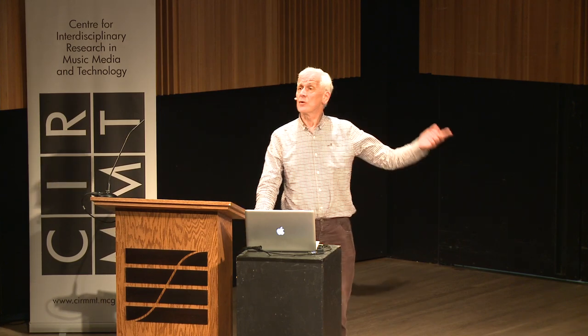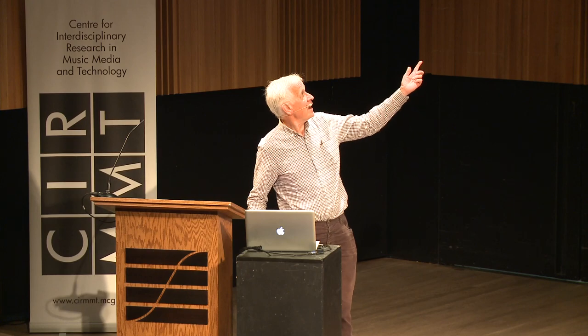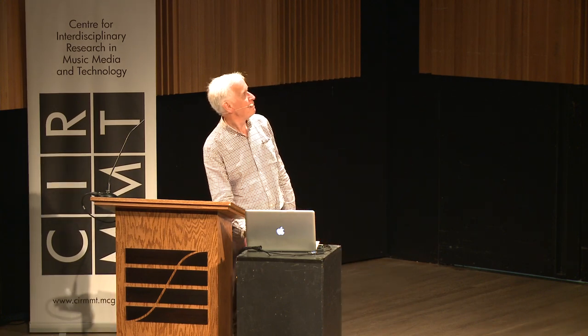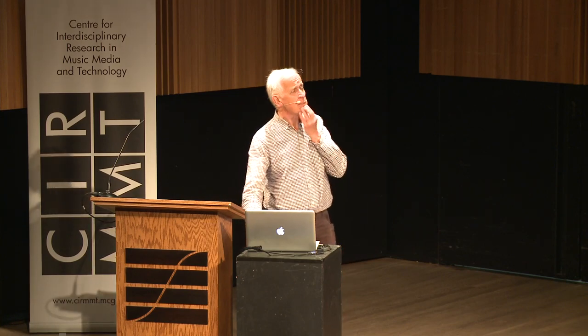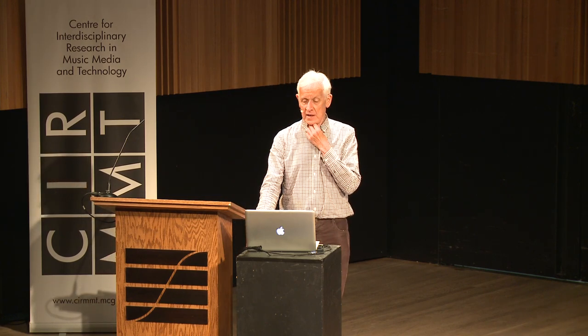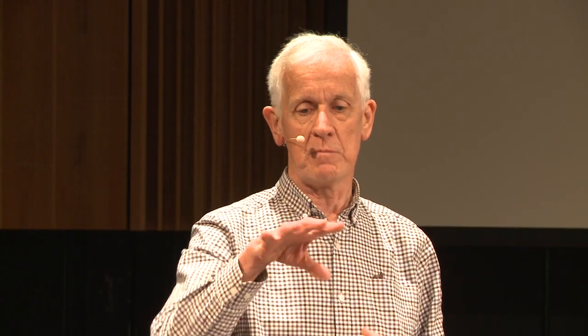Lute music is almost always notated in tablature, which needs to be transcribed into staff notation for humans to analyze — except for players who even now prefer tablature. There are good practical reasons for that. It's a prescriptive notation, not a descriptive one — it tells the player what to do with his or her fingers. It doesn't describe what's in the music; it doesn't tell you 'this is a B flat.' It just says, put your finger on this fret and play this note at this moment. It uses a letter or a number code, not completely unlike a computer program.